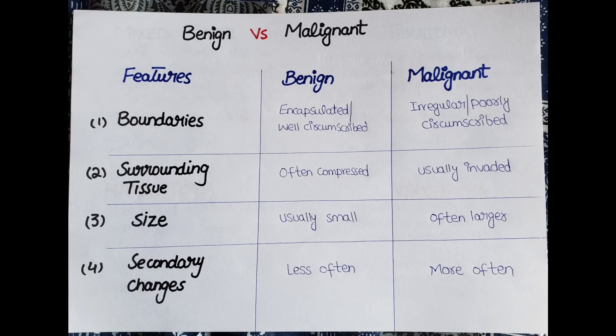Now let's look at some gross differences between benign and malignant tumors. Regarding boundaries, benign tumors have encapsulated or well-circumscribed boundaries, while malignant tumors have irregular and poorly circumscribed boundaries. Regarding surrounding tissues, benign tumors often compress adjacent tissues, while malignant tumors usually invade them. Regarding size, benign tumors are usually small while malignant tumors are generally larger.